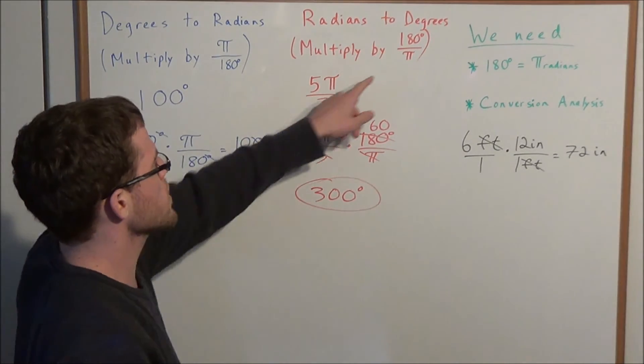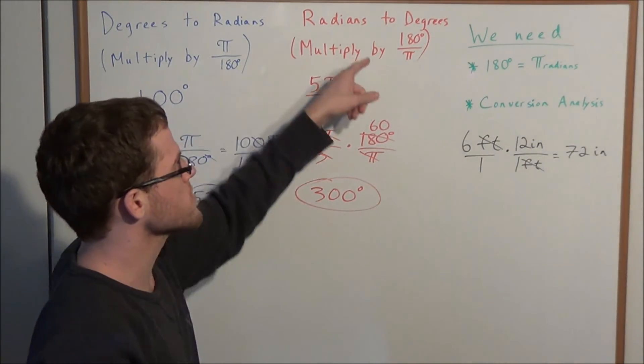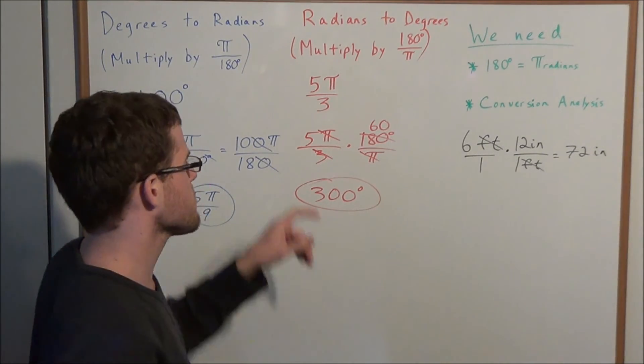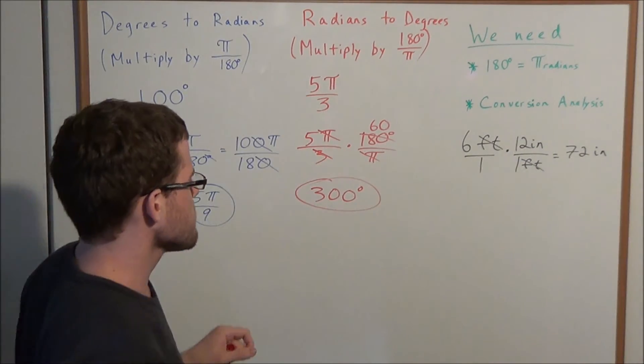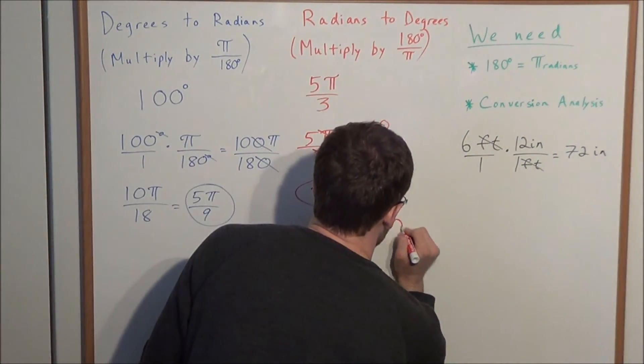Now, the reason why I like to use conversion factors, some teachers will show to go from radians to degrees you could just simply substitute π equals 180 degrees. But the reason why I'm not a big fan of that method is because, let's say they gave it to you without a π term. If they gave you 2 radians.